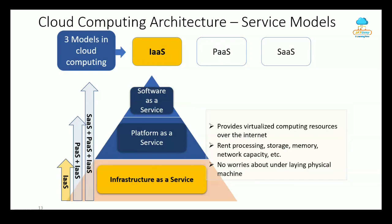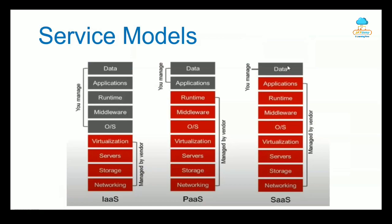Infrastructure as a Service provides virtualized computing resources over the internet — you rent processing, storage, memory, and network capacity, with no worries about the underlying physical machine. In IaaS, your responsibility is maximum: you manage data, applications, runtime, and the operating system. In PaaS, you only control your data and application. In SaaS, you only control your data — you are simply using it as a service.